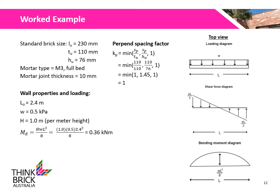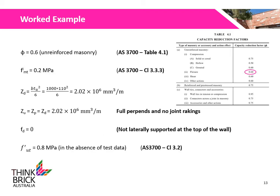Using a standard brick size, the perpen spacing factor Kp is calculated to be 1. The design bending moment is 0.36 kNm for a 2.4m long wall. The shear and bending diagrams are shown to represent how the values are obtained. The capacity reduction factor Φ is assumed to be 0.6 for unreinforced masonry, derived from Table 4.1 of AS3700.